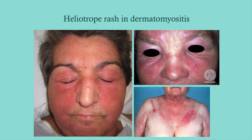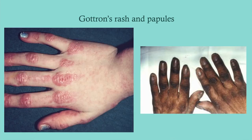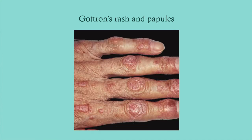The heliotrope rash has a malar-like distribution affecting the cheeks but also involves the eyelids — which distinguishes it from the malar rash. The shawl sign is in the distribution where you'd wear a shawl, also in sun-exposed areas. Gottron's rash presents as an eczematous-like rash over the knuckles and finger joints. The papules tend to be hyperpigmented, so in a person of color, look for hyperpigmentation rather than redness.